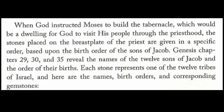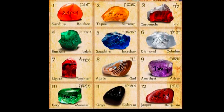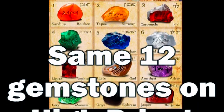Here are the birth orders and corresponding gemstones: Reuben, firstborn — sardius; Simeon, second — topaz; Levi, third — carbuncle; Judah, fourth — emerald; Dan, fifth — sapphire; Naphtali, sixth — diamond; Gad, seventh — ligure or jacinth; Asher, eighth — agate; Issachar, ninth — amethyst; Zebulun, tenth — beryl; Joseph, eleventh — onyx; Benjamin, last — jasper.